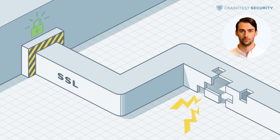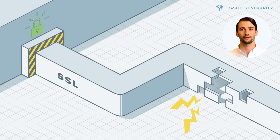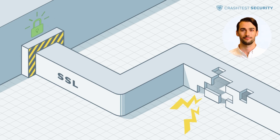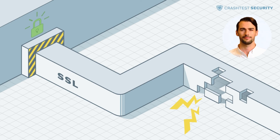Do you want to check the security of your web app or API? Try Crash Test Security's vulnerability testing software today to spot cybersecurity vulnerabilities quickly and discover how it integrates into your development stack for efficient, automated vulnerability scanning. The trial is free. Subscribe to the Crash Test Security channel to get more information about significant web security threats, their prevention, and how to use the Crash Test Security Suite. Thank you for watching and see you in our next video.